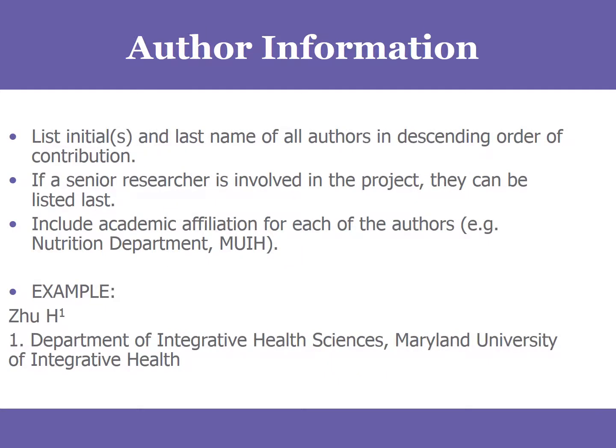Next comes the author information. Whether you have one or many authors, the form that you're going to use for submission has a place to enter the author's name and their affiliation, their department, and also to ascribe the order of authorship. It should be in order of involvement. The first author is always the author who spearheads the project and takes the lead in making it happen, and then it follows in level of involvement or effort on the project.